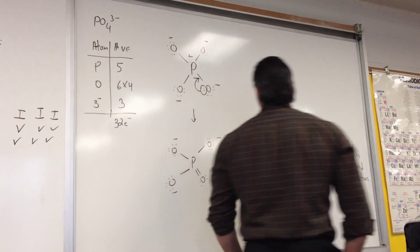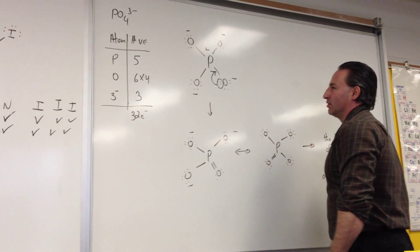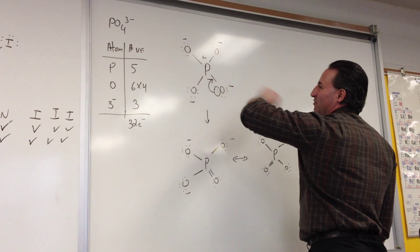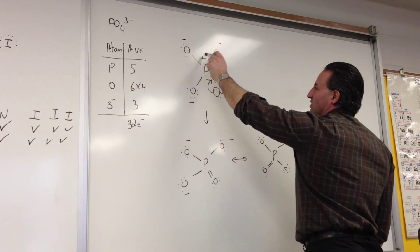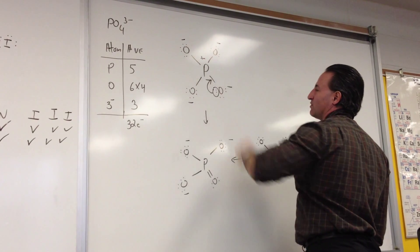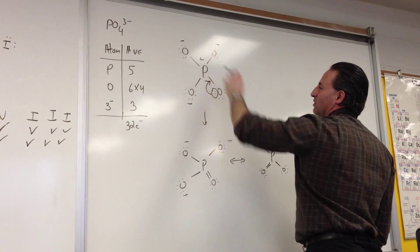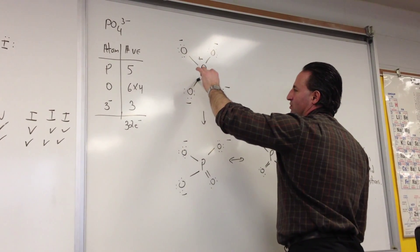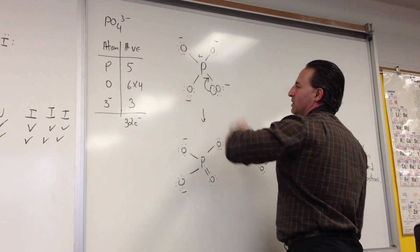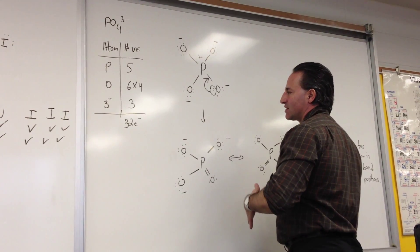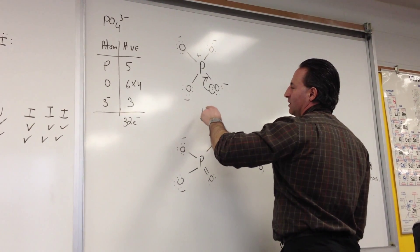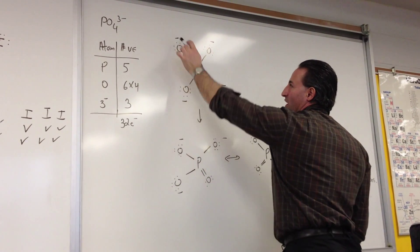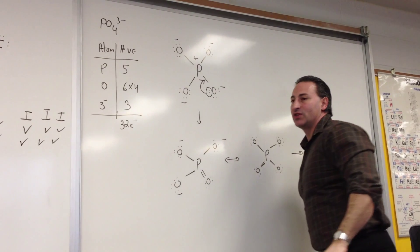We find that when we draw that Lewis structure, we end up with formal charges on just about every atom in the molecule. The phosphorus has a fulfilled octet here, but it would like to have possession of 5 electrons. But each of these is worth 1, so it actually has possession of 4 electrons. Therefore, it's left with a formal charge of +1. The oxygen atoms similarly have fulfilled octets 2, 4, 6, 8. But because they like to have possession of 6 electrons, and in this case they actually have possession of 7 - 2, 4, 6 plus the 1 here gives you 7 - so each of the oxygen atoms ends up having a formal charge of -1.